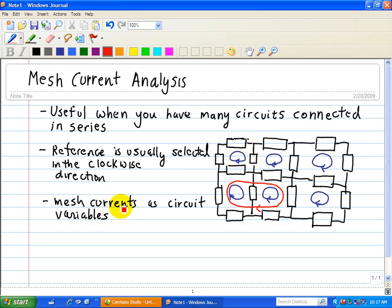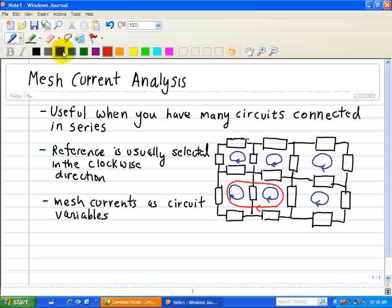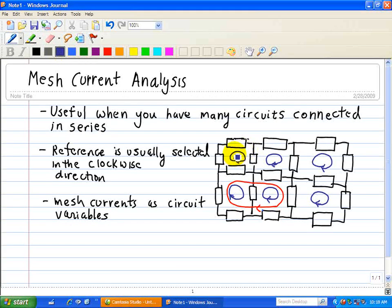The mesh currents are the circuit variables that are unknown. Once we find these unknowns, the mesh currents - we'll call this mesh current IA, IB, and IC, ID, IE, and IF - once we find these unknowns, that completely describes this circuit.